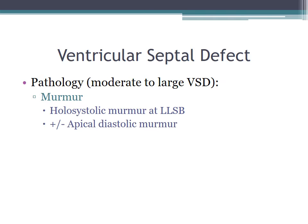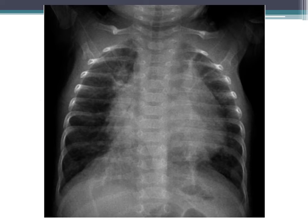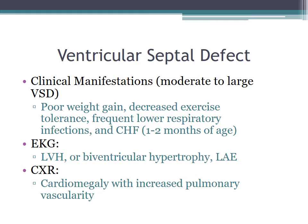A chest x-ray in a patient with a VSD can show cardiomegaly and increased pulmonary vascularity. For moderate to large VSDs, you can have poor weight gain, decreased exercise tolerance, and frequent lower respiratory tract infections. CHF usually develops around one to two months of age with VSDs of this size. EKG can show LVH, biventricular hypertrophy, and left atrial enlargement.